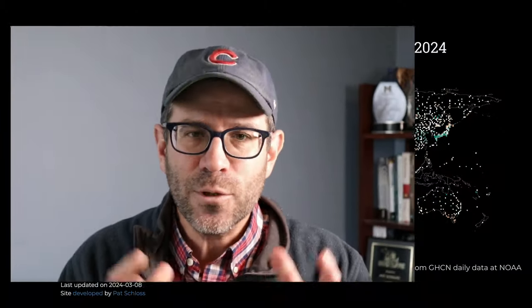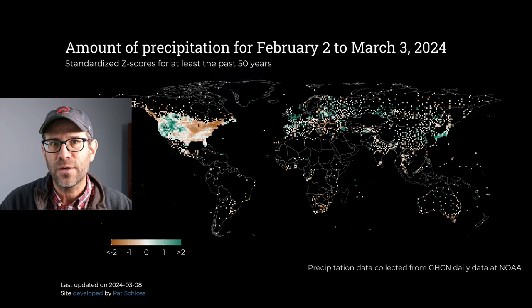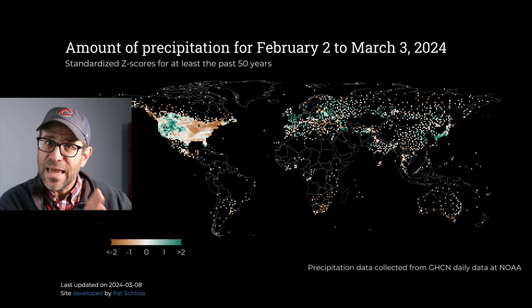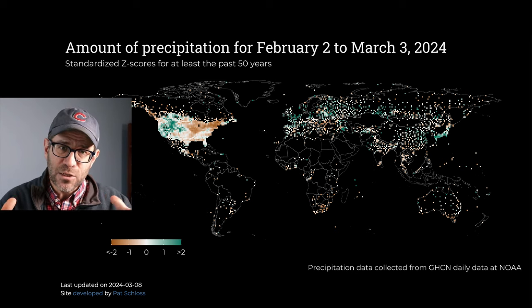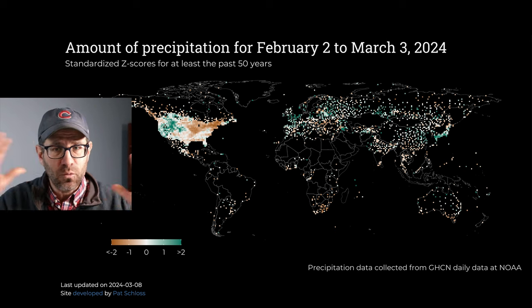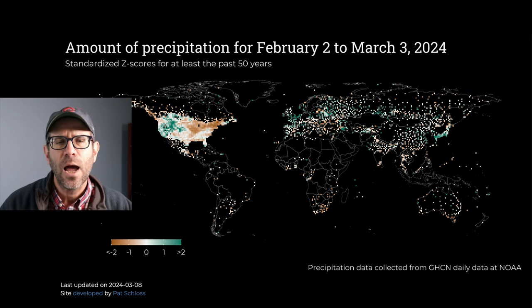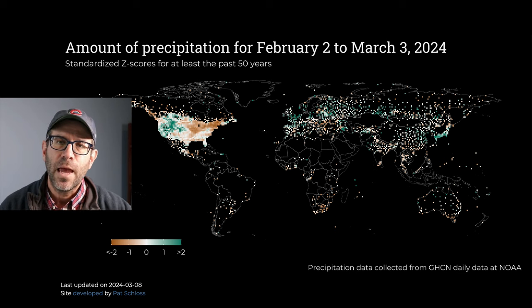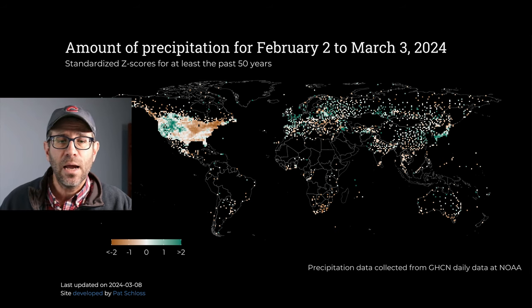If you recall, at the end of that series of videos, we were generating this visual showing the level of droughtiness over the previous month relative to that same period of time over the previous 50 years. The redder or browner the color, that indicates more of a drought condition, and the more green indicates that it's been wetter that period of time.